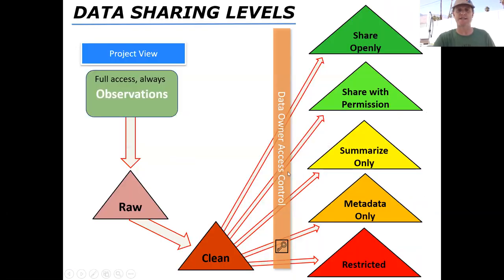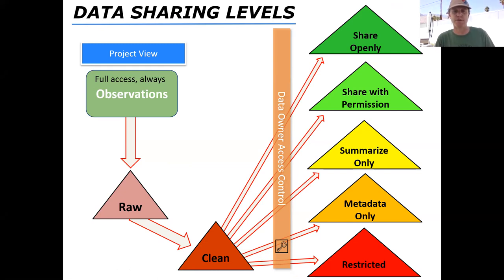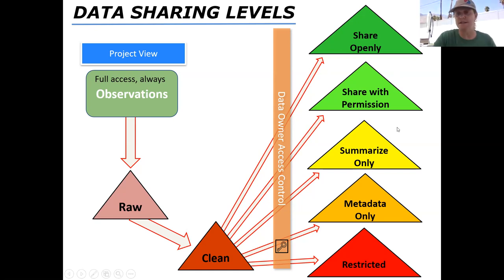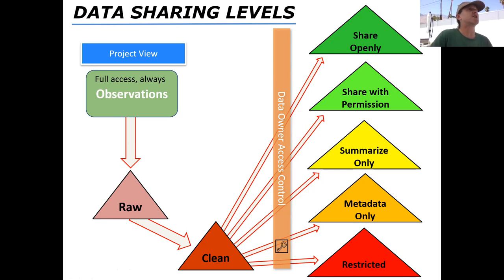We have data sharing levels. We enter the data, the observations, make sure they're clean, and then make them available from very restricted to openly shared. Most KBO data are shared with permission — they can be discovered, but to get the pure raw data we ask that people request permission and usually sign data sharing agreements. We can also hide sites if they're sensitive, on private lands, or hide an entire survey if there's a rare or endangered species detected that we don't want visible.